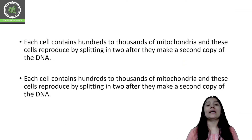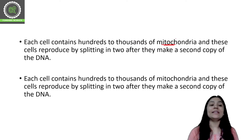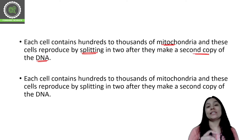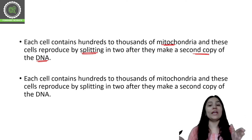Each cell contains hundreds to thousands of mitochondria. These mitochondria reproduce by splitting into two after making a second copy of their DNA. When the second copy is created, the organelle splits and two new mitochondria are formed.